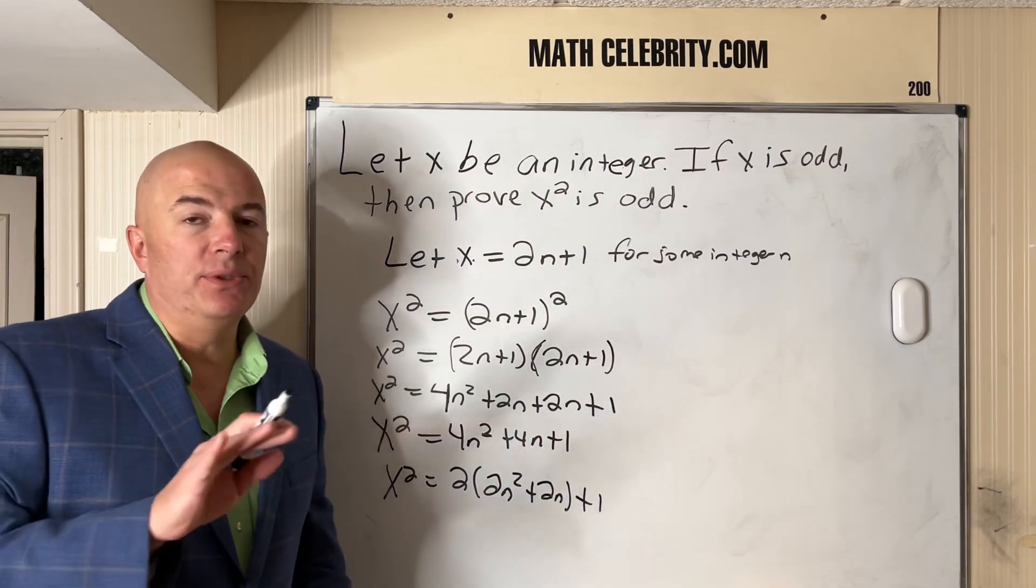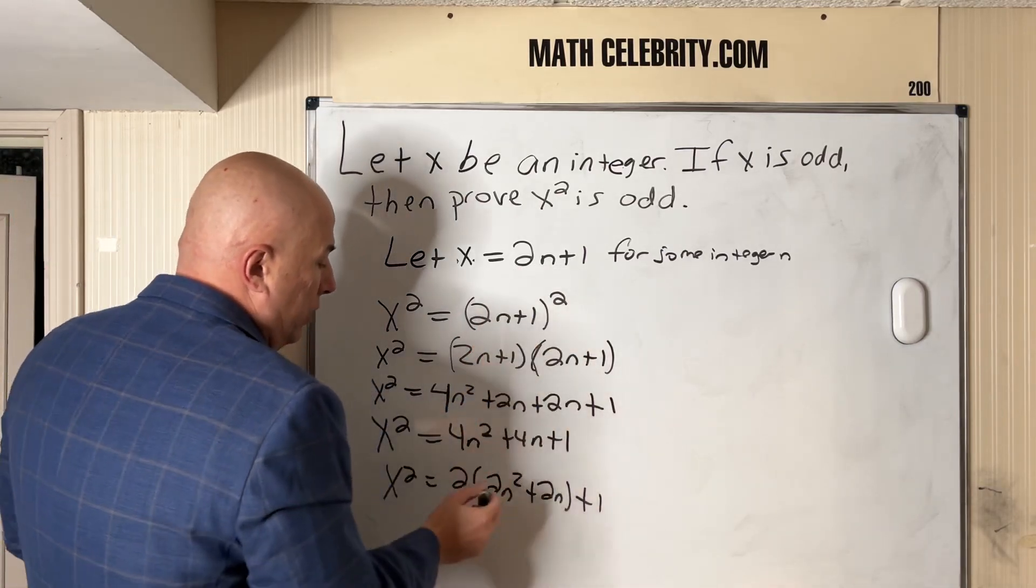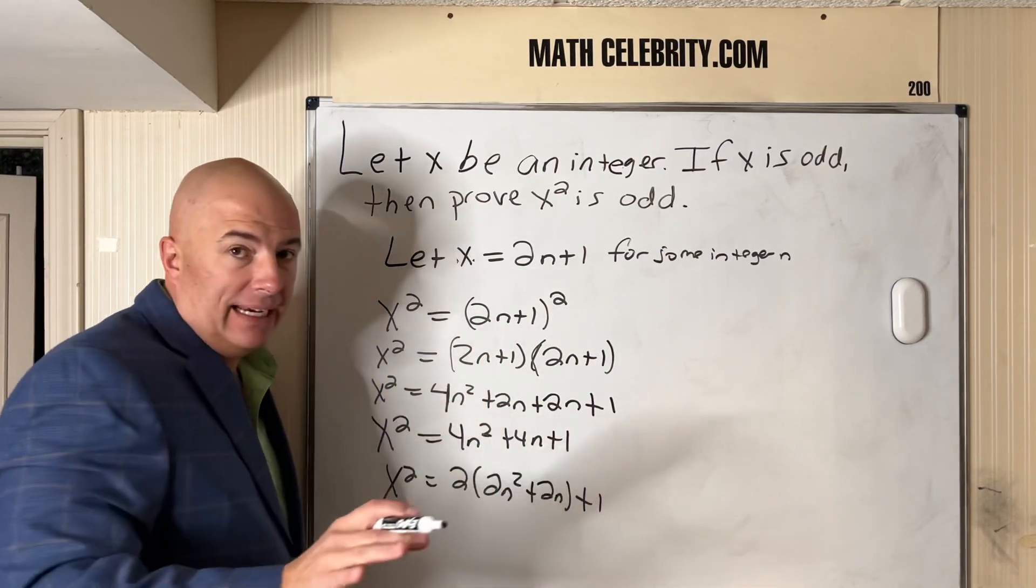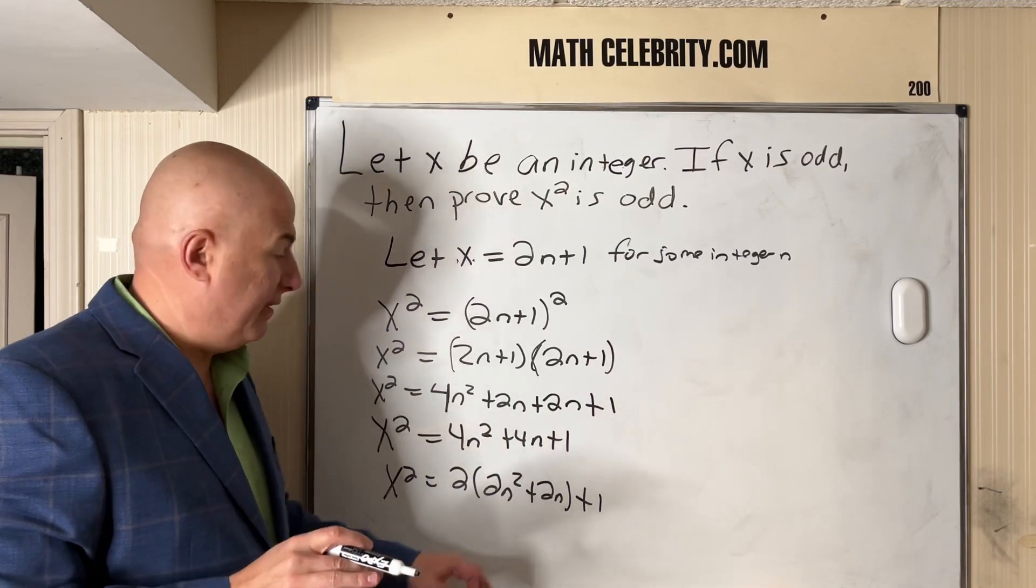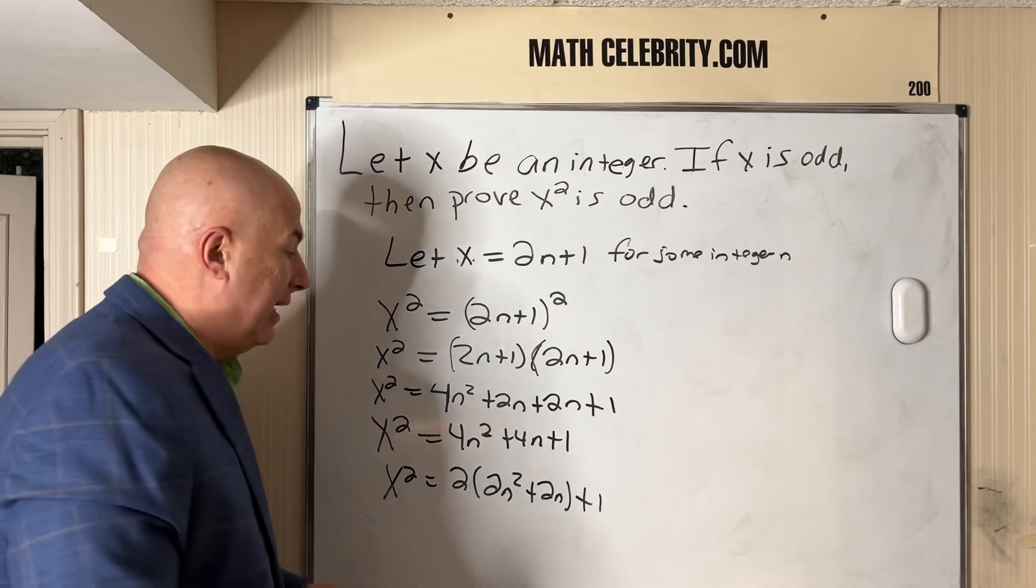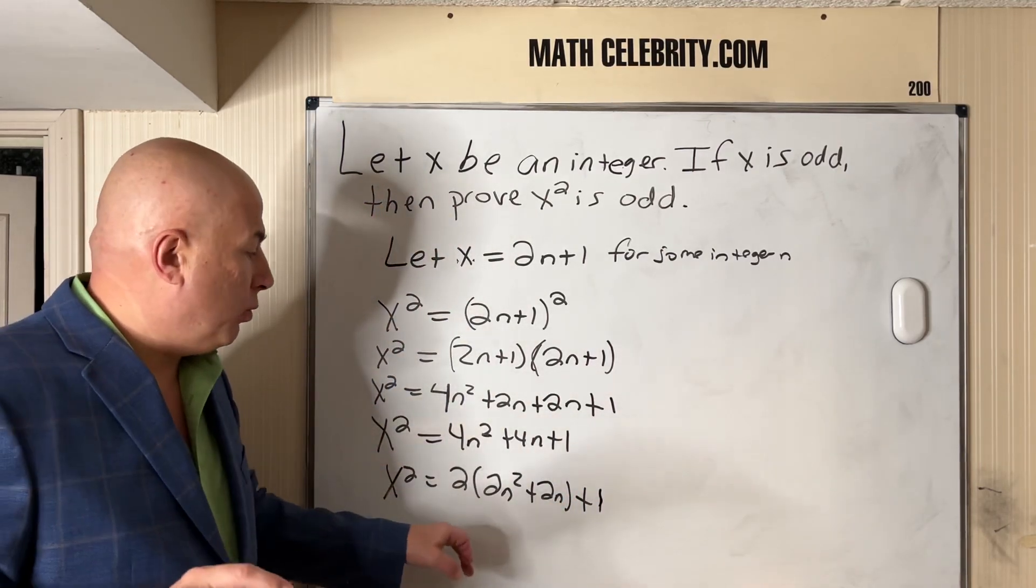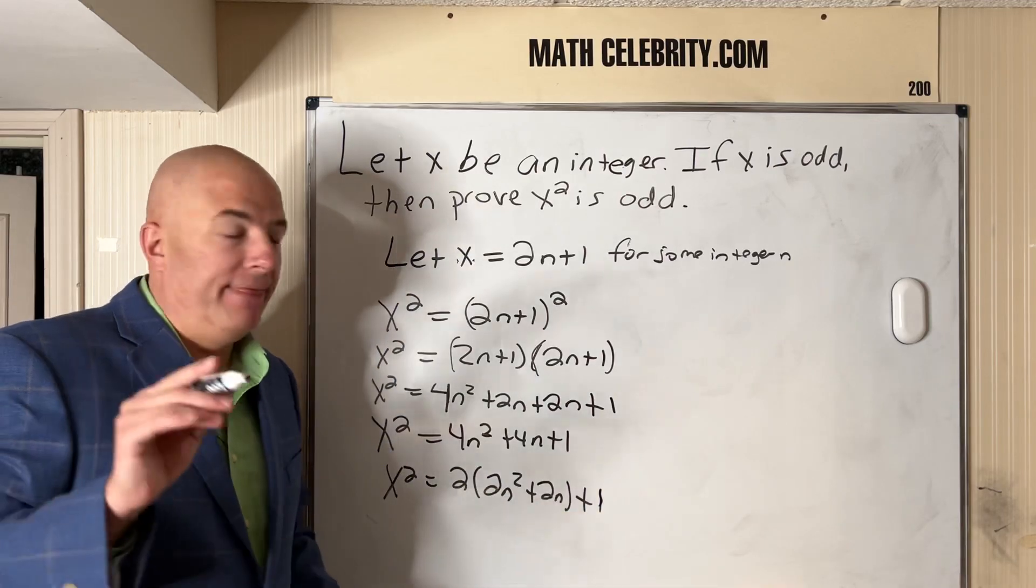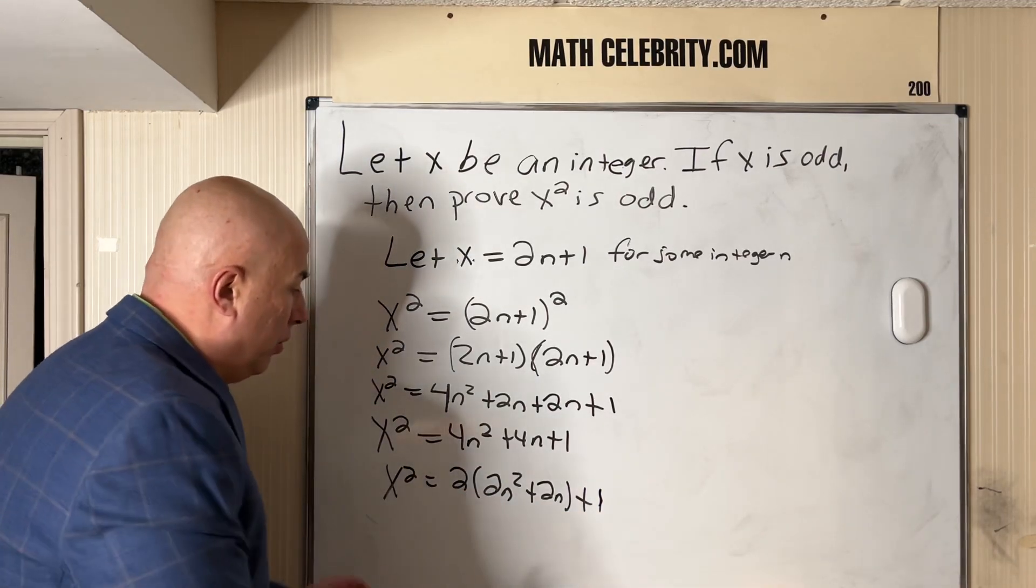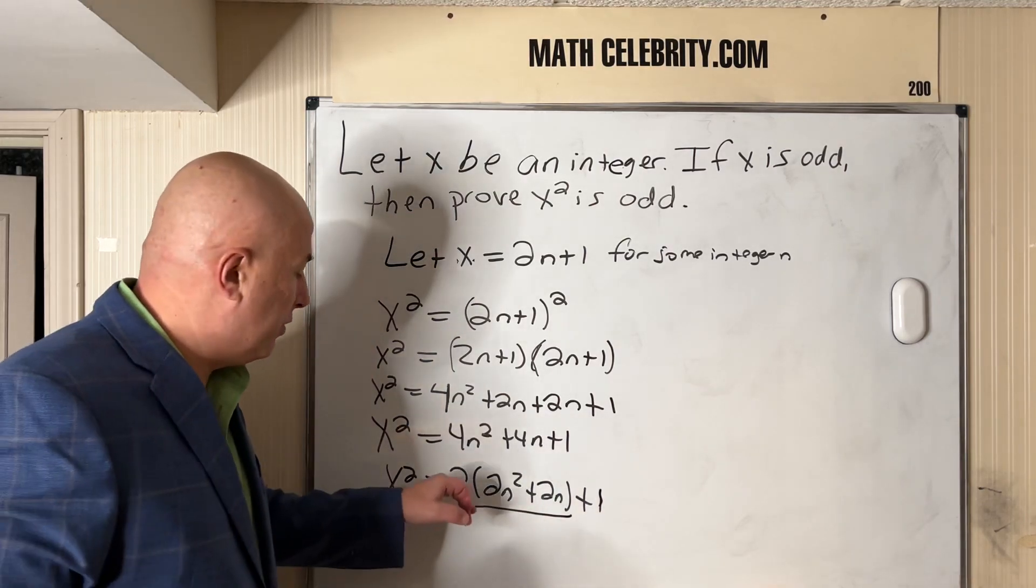Now let's pause. Do you see any pattern or match from the beginning? Notice 2 times anything is an even number if it's an integer number. 2 times an even is an even, 2 times an odd is an even, but then we add plus 1. So any even integer plus 1 is always an odd number. And this is why we factored out the 2. This piece right here is always even because we multiply by 2.